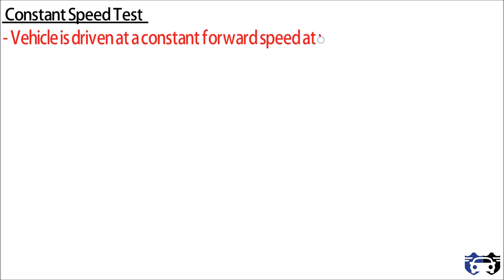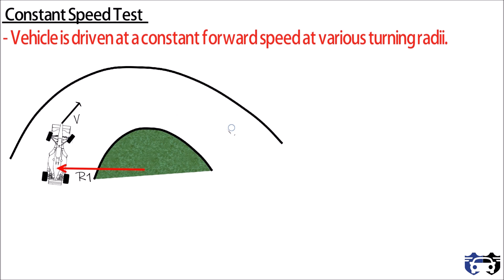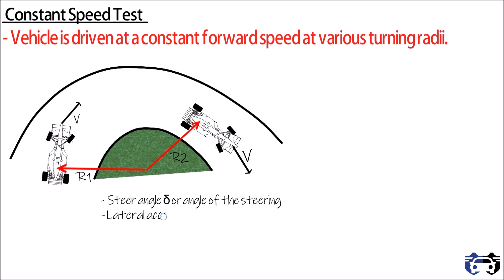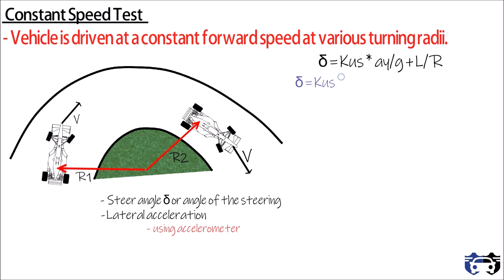The next test is the constant speed test. In this test, the vehicle is driven at a constant forward speed at various turning radii. Here you can see the car is turning with constant speed V with different radii such as R1 and R2. For this test, two values are required: the first is steering angle delta or angle of steering wheel, and the second is lateral acceleration, which you have to calculate using an accelerometer.